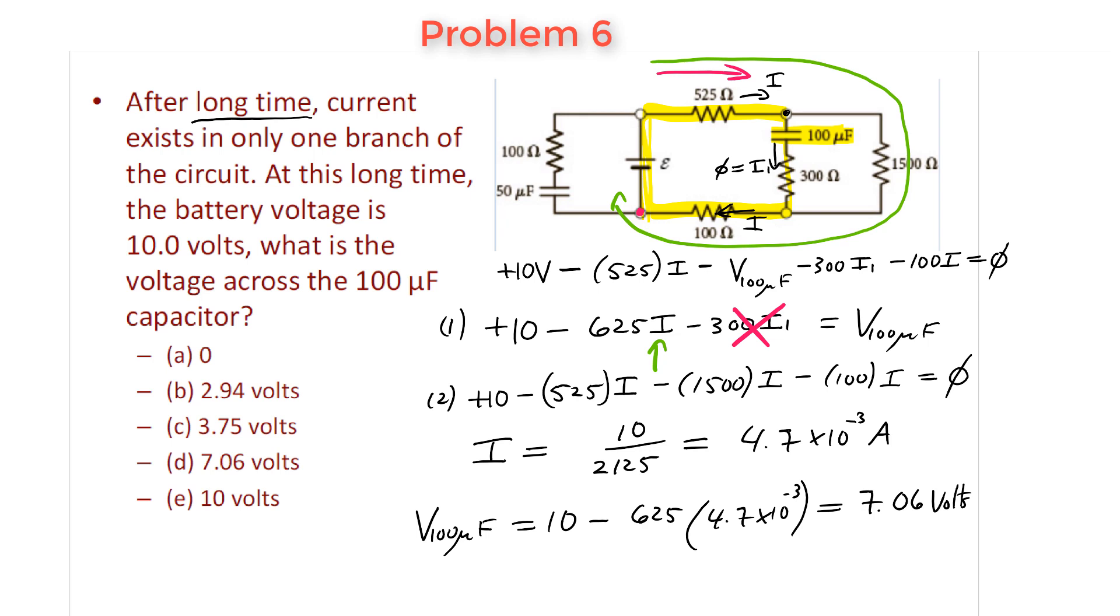So notice this case is a little bit different than the 50 microfarad capacitor we previously did, and that's because there's another resistor here. There's a resistor between the battery and that capacitor and there is current flowing through this 525 resistor. Okay, so in this case D is the correct answer.